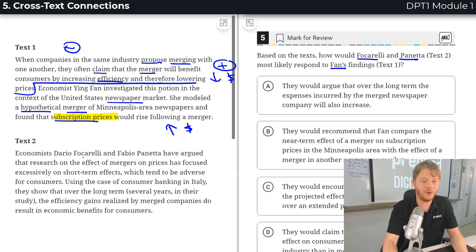Text two is saying economists Dario Foccarelli and Fabio Panetta have argued that research on the effect of mergers on prices has focused only on the short-term effects, which tend to have adverse effects, which is like kind of bad effects for consumers.